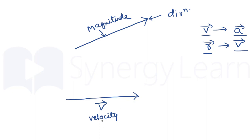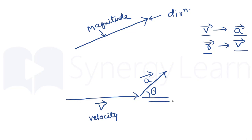So here we have a velocity vector, and acceleration acts in this direction forming angle theta with the velocity. To find the components of acceleration: the component along the vector will be called A cos theta, and the component perpendicular will be A sin theta.